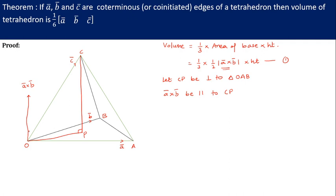Further I am assuming the angle between A cross B and C bar be theta. Let angle between A cross B and C bar be theta. Now according to geometry if this angle is theta then obviously angle OCP is also theta. So therefore angle OCP is also theta.